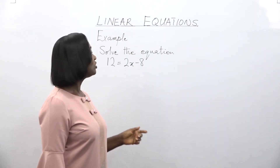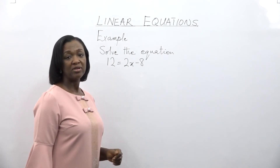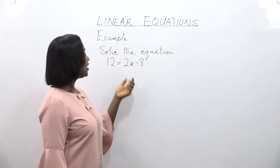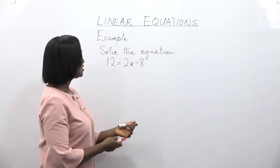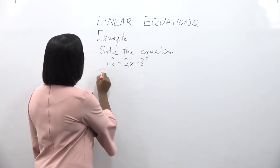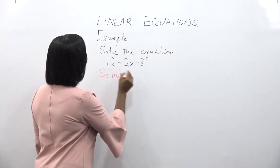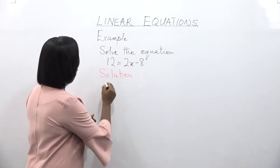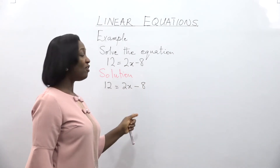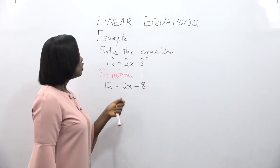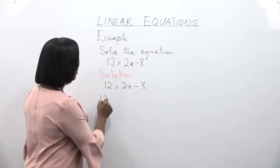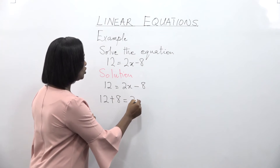In this equation, we want to solve 12 is equal to 2x minus 8. It doesn't really matter on what side the unknown is written. x is the unknown here and is on the right hand side. We can actually leave it there and still work. So we have 12 is equal to 2x minus 8. We want to find the value of x.